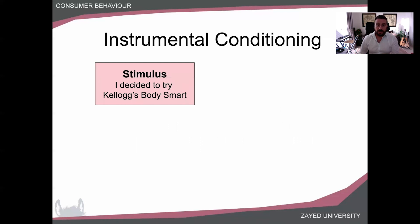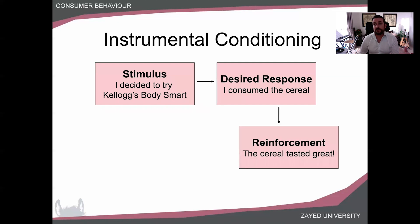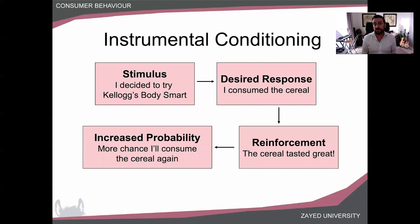When I was in the mall last, I received a very small packet of Kellogg's Body Smart, a type of cereal, and I found that to be a nice little reward in itself. So I received a reward from Kellogg's, and they actually achieved the desired response — I consumed the cereal. Then when I consumed the cereal, I got some reinforcement, another reward. The cereal tasted great, and because of that positive reinforcement, it's more likely that I'm going to buy the cereal next time.